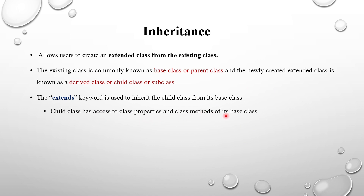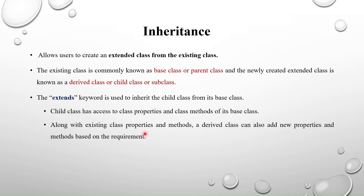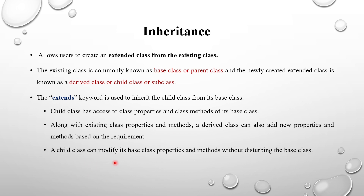Some key points: a child class has access to the class properties and methods of its base class. Along with the existing class properties and methods, a derived class can also add new properties and methods based on its requirements. Additionally, a child class can modify its base class properties and methods without disturbing the base class — using the child class handle, not the base class handle.